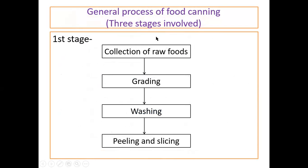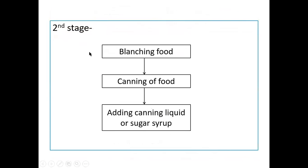This is the general process for food canning. We can divide this process into three stages. At the first stage: collection of raw food, grading, washing, peeling, and slicing. At stage two: blanching of food, canning of food, and adding canning liquid or sugar syrup.